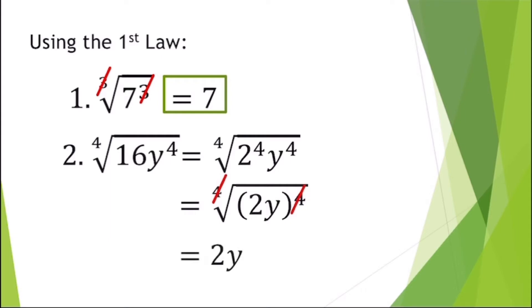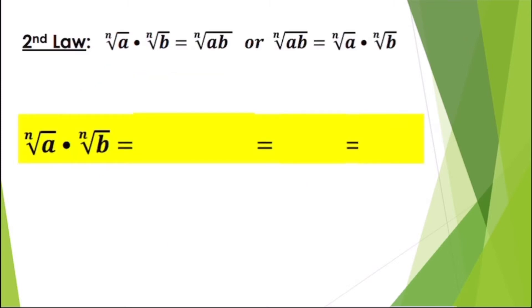Since the index equals the exponent, cancel them and remove the radical symbol. Therefore the answer is two y.